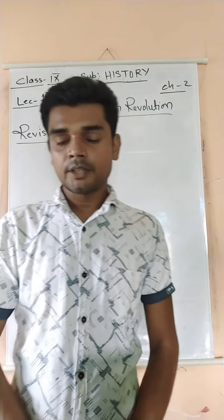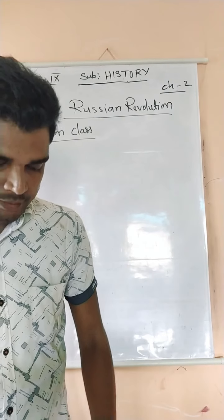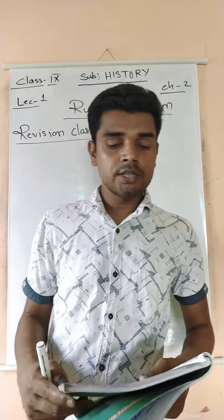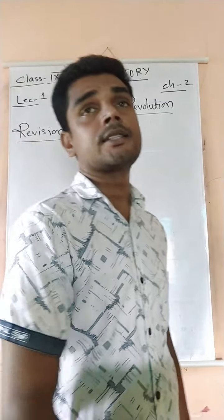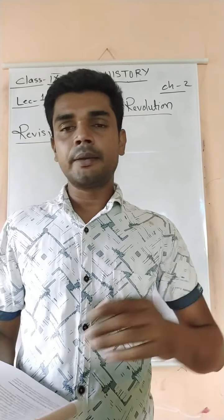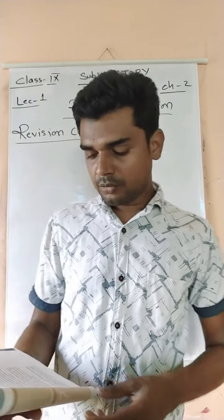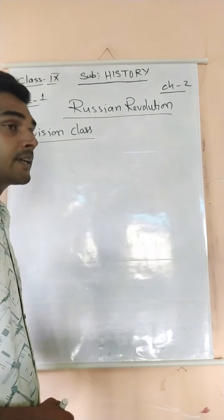Good morning class. Today we start with Class 9 History Book Chapter 2: Socialism in Europe and the Russian Revolution. This is our revision class and first lecture, so we will study the important topics in these chapters. The first topic we will take up is liberals, radicals, and conservatives.